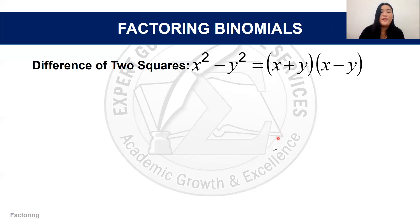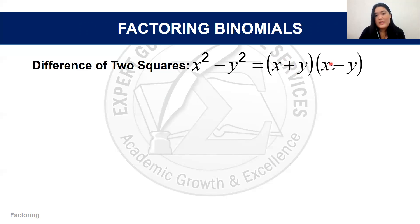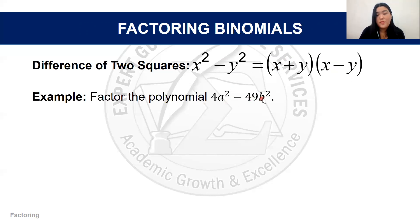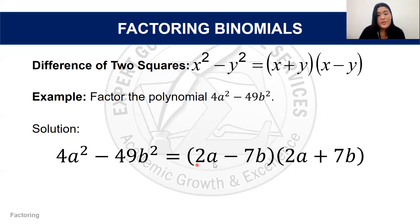We also have factoring for binomials: the Difference of Two Squares. You just need to ensure the first and last terms are perfect squares with a minus sign between them. The factored form is (x + y)(x - y). For example, 4a² - 49b²: the square root of 4a² is 2a and the square root of 49b² is 7b, so the answer is (2a - 7b)(2a + 7b).